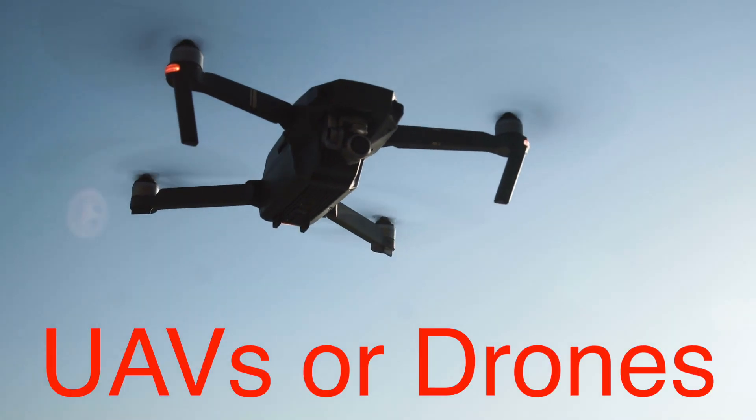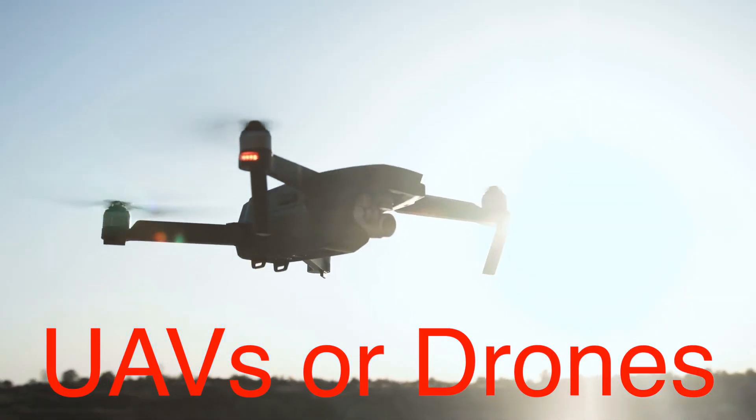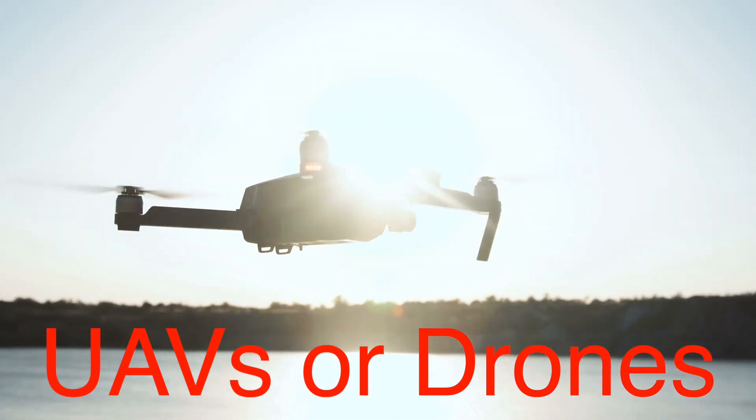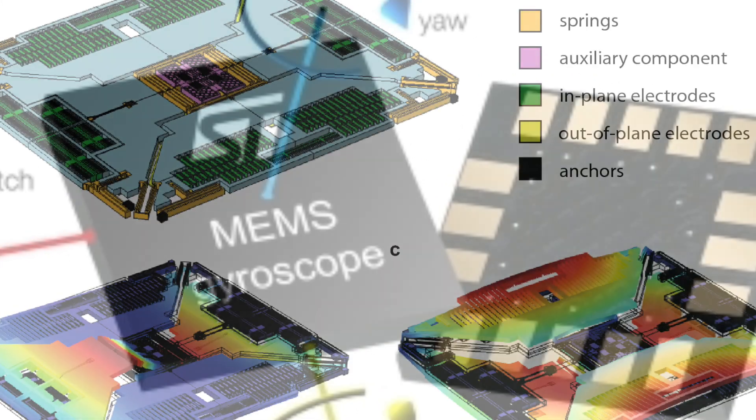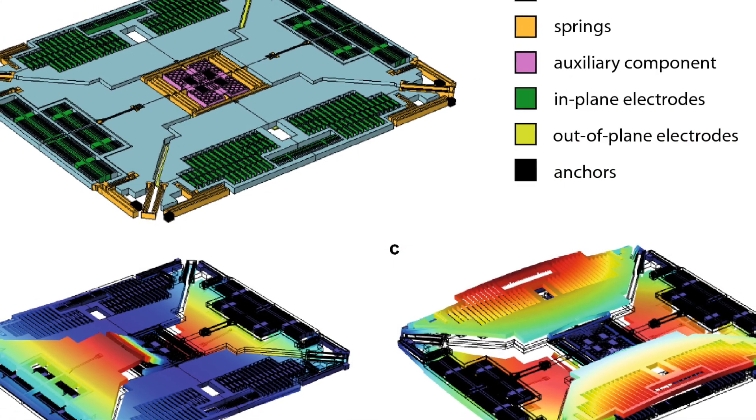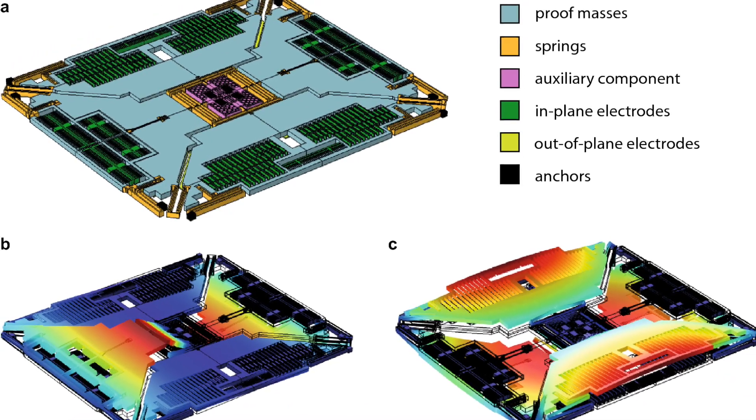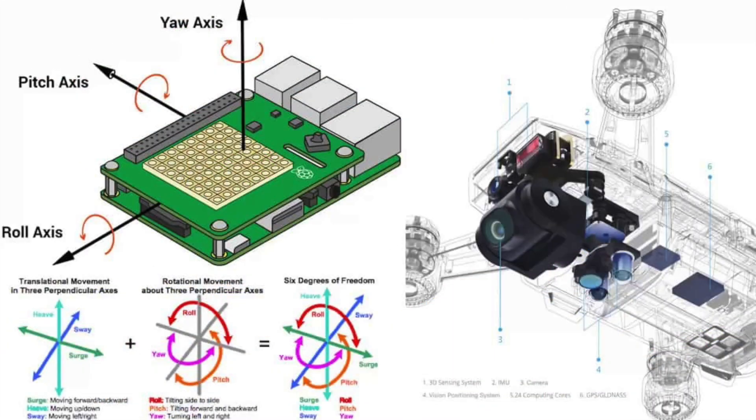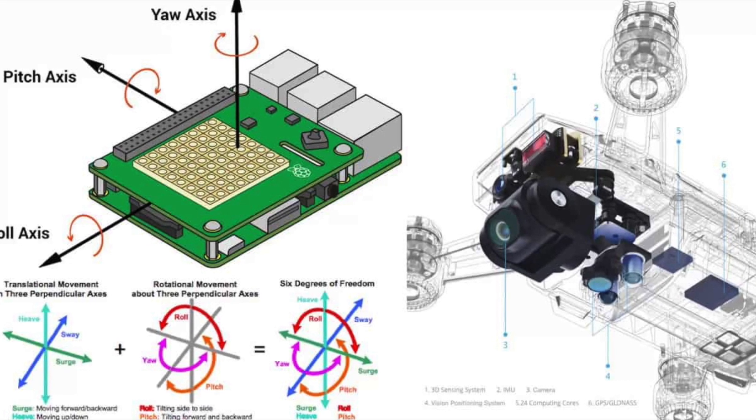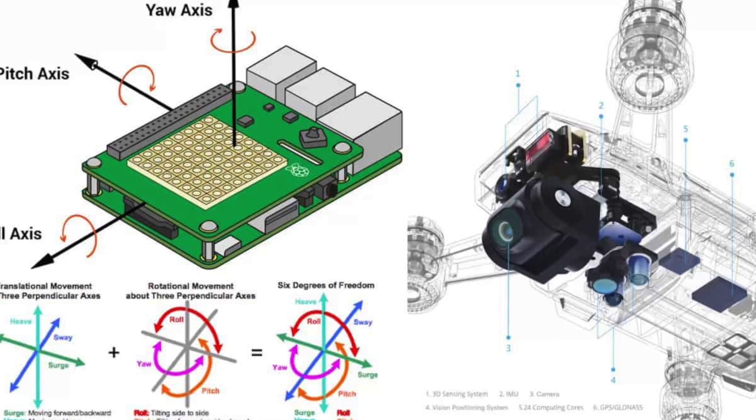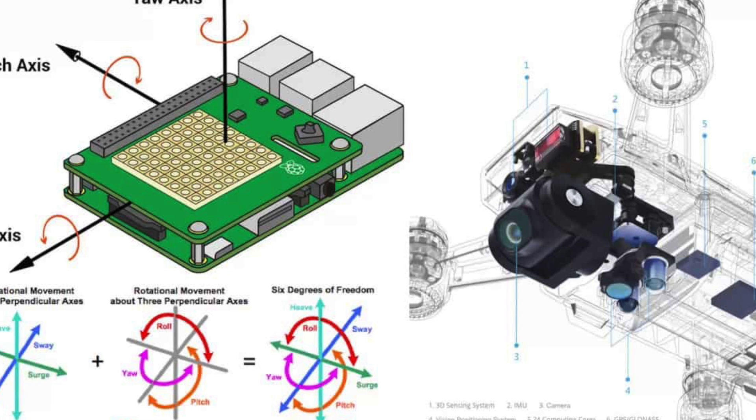Similarly, in the realm of unmanned aerial vehicles, UAVs, or drones, gyroscopes are integral to flight stability. Modern drones use microelectromechanical system, MEMS, gyroscopes, which are tiny sensors capable of detecting changes in orientation. These gyroscopes provide real-time data to the drone's flight control system, allowing it to make rapid adjustments to maintain stability and orientation. Whether it's hovering in place or navigating through complex environments, the gyroscopes ensure that the drone remains balanced and responsive to control inputs.